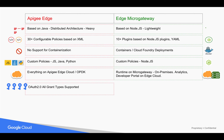Apigee Edge supports all four OAuth grant types including client credentials, password, resource owner, and authorization code. Edge Micro Gateway supports only client credentials, and the password grant type can be used with a third-party IDP.